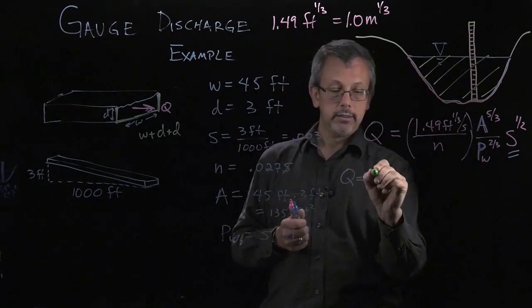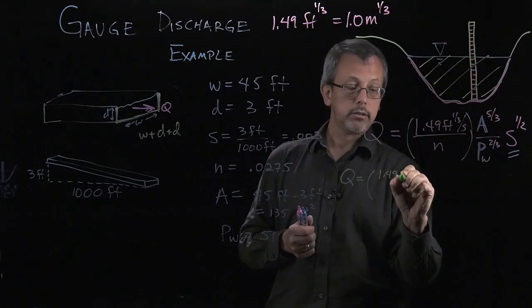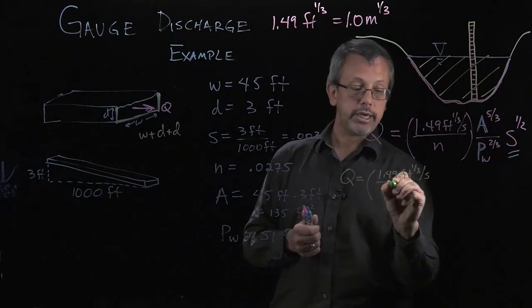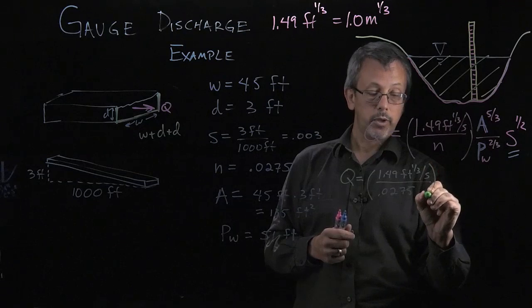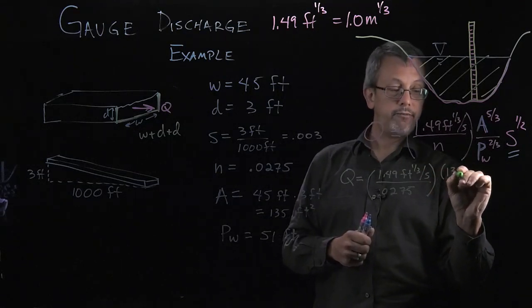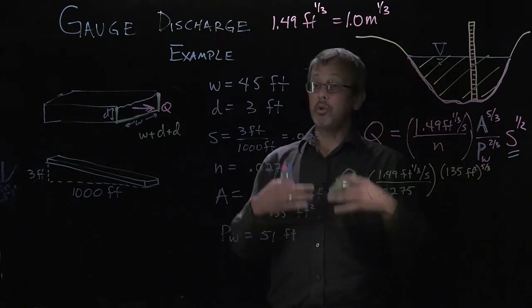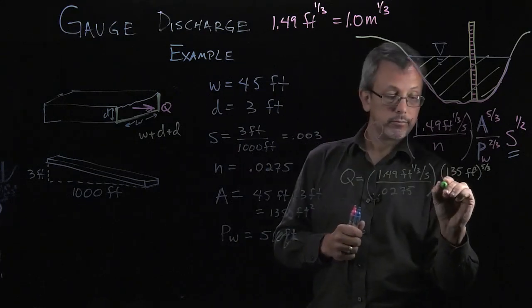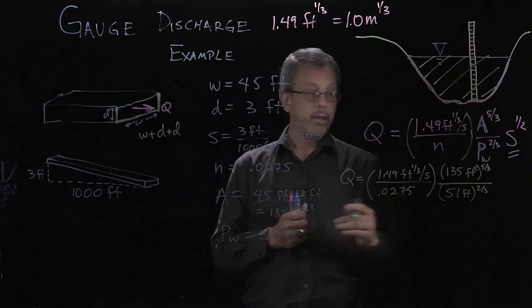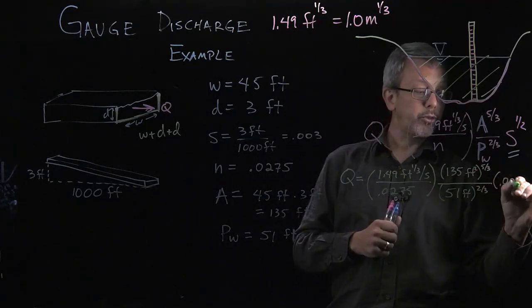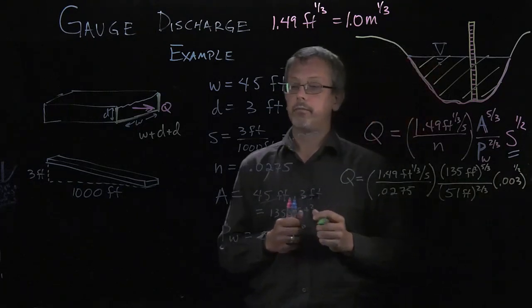Our flow, which depends upon D, is going to be equal to 1.49. And notice all these things were measured in feet, so the 1.49 is the appropriate unit, feet 1 third per second, over our Manning's coefficient of 0.0275 unitless. We have our area here of 135 square feet to the 5 thirds power. That means to the fifth power, and then we take the cube root of that. We divide that by 51 feet to the 2 thirds power. And finally we have our slope 0.003 to the 1 half power, which is the square root. To the 1 half power.